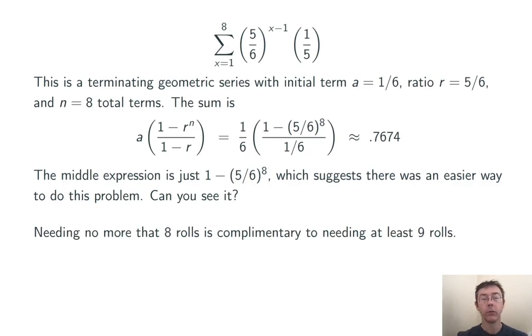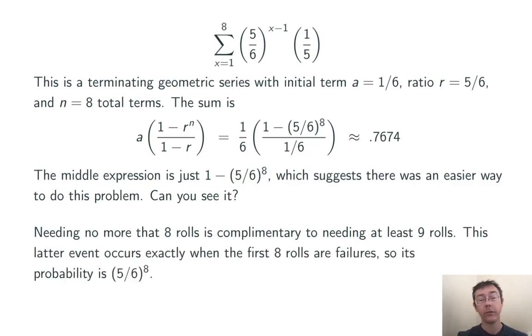Okay, the reason here is that we're looking at a complement. Needing no more than eight rolls is complementary to needing at least nine rolls. And we can compute the probability of needing at least nine rolls directly. That just means that you've had eight failures in a row to start. So the probability that you need at least nine rolls is 5/6 to the eighth. The probability of needing no more than eight rolls is 1 minus that, 1 minus 5/6 to the eighth.